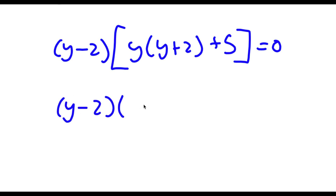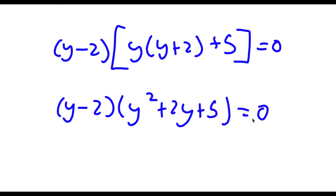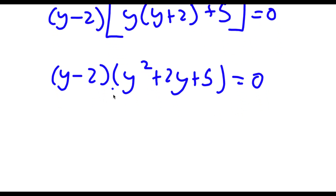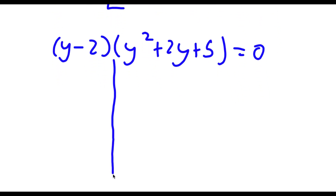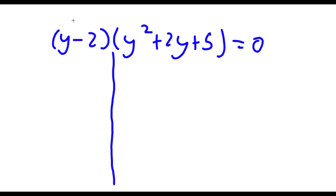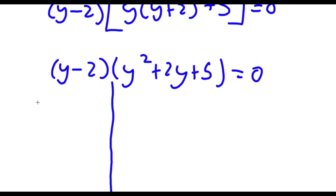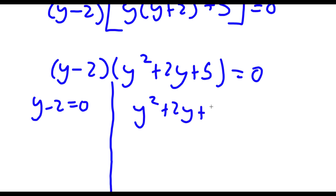So now this gives me two equations: y minus 2 is equal to 0, and y squared plus 2y plus 5 is equal to 0.